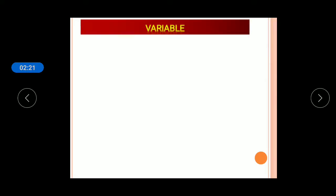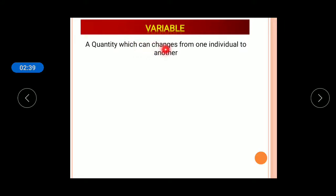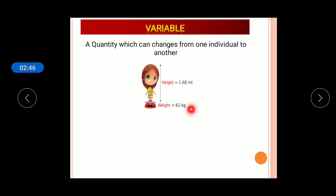Next, let us know what a variable is. A variable is a fundamental unit of statistics. A quantity which can change from one individual to another is called a variable. For example, height and weight change for each and every individual.